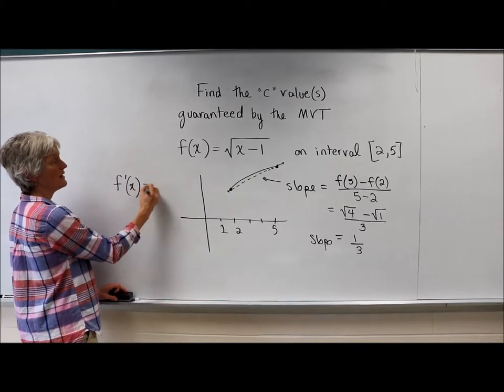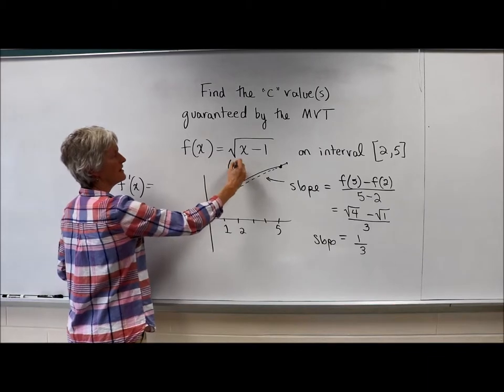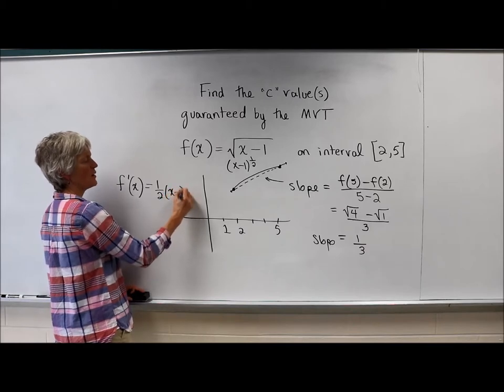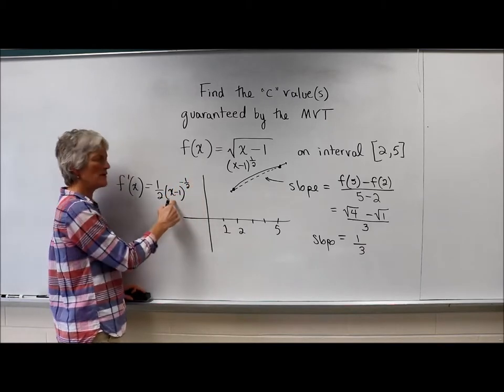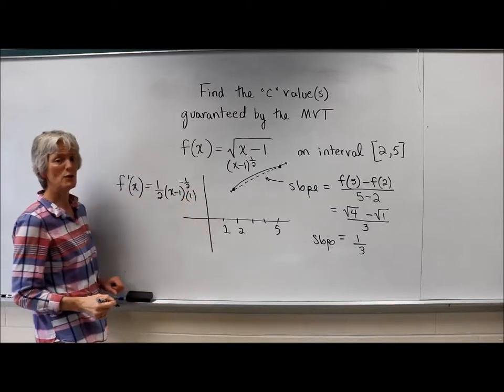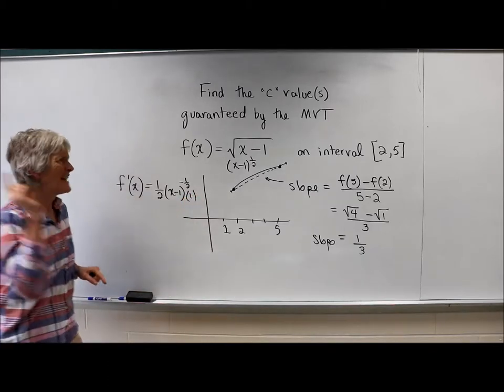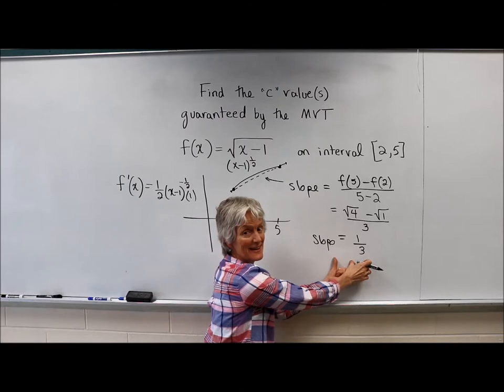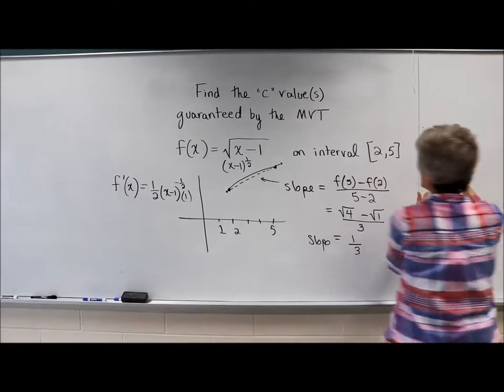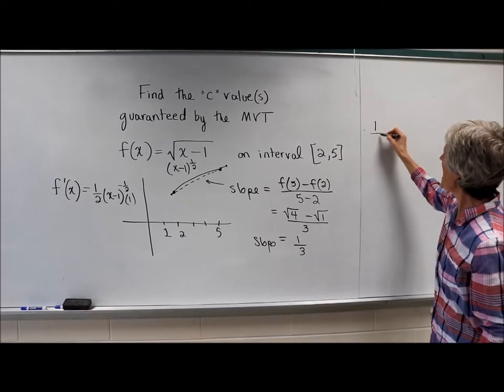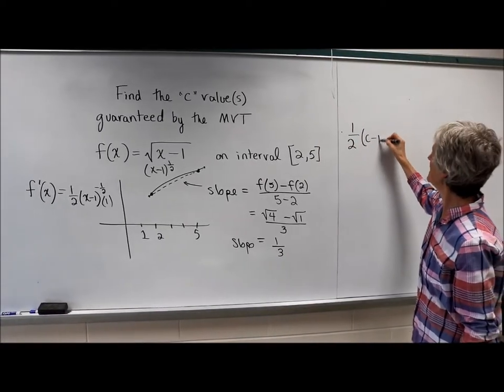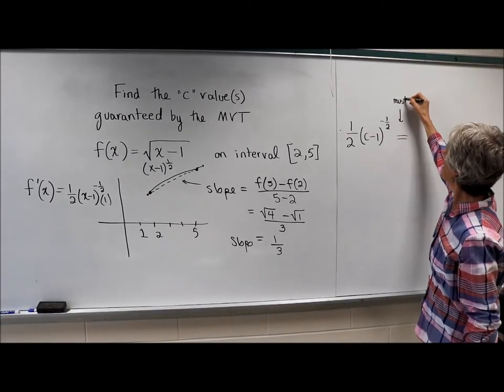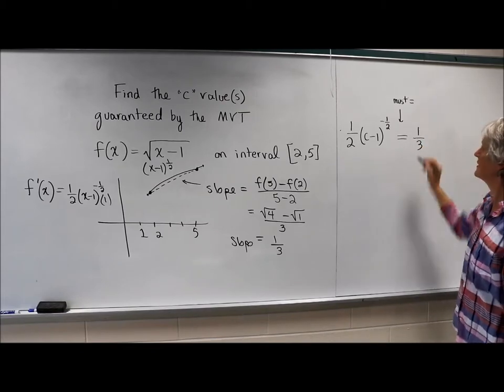I'm going to take the derivative of this. This is (x - 1)^(1/2), so let's do one-half times (x - 1)^(-1/2) times the derivative of the inside, which is just a 1. So the mean value theorem says there has to be a c value where this equals this. So one-half times (c - 1)^(-1/2) must equal one-third.